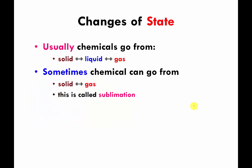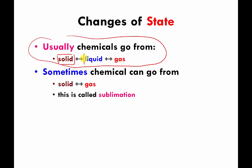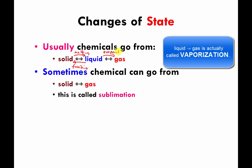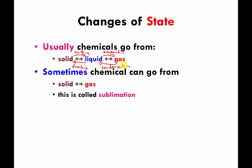Usually, under conditions we are accustomed to, materials go from a solid state to a liquid state if we heat them up, and if we heat them up even more, they turn into a gas — all examples of changes of state. Each of these changes has its own special name. Going from a solid to a liquid is called melting; going from a liquid back to a solid is called freezing. Going from a liquid to a gas is called evaporation, and going from a gas back to a liquid is called condensation.